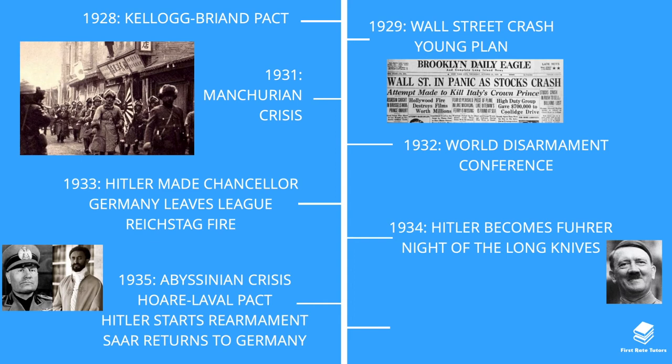Also during this crisis there was the Hoare-Laval Pact, secretly drawn up between UK Foreign Secretary Samuel Hoare and French Premier Pierre Laval, and sent secretly to Mussolini. It essentially told him that if he resolved the Abyssinian crisis by taking two-thirds of the best Abyssinian land and letting Emperor Haile Selassie keep one-third of the worst land, they would be fine with it. However, this was leaked, Mussolini ignored it, and it caused a major uproar.